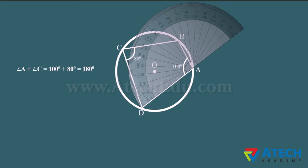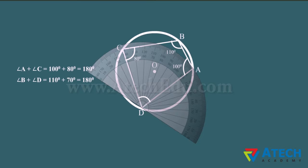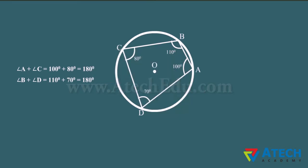Similarly, angle B measures 110 degrees and angle D measures 70 degrees. Thus, the sum of angles B and D is 180 degrees.